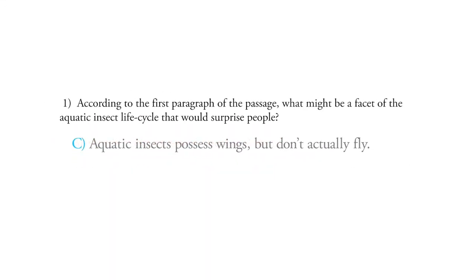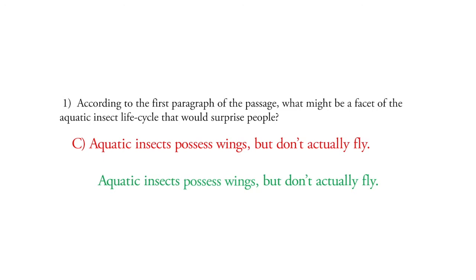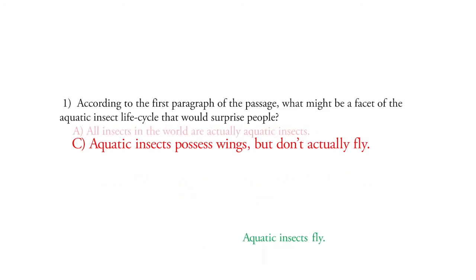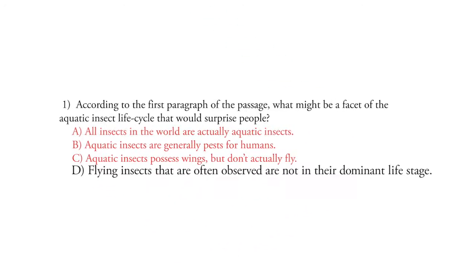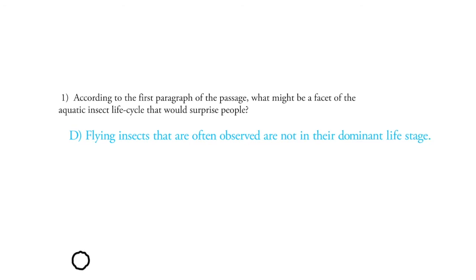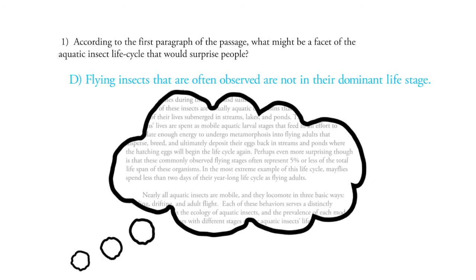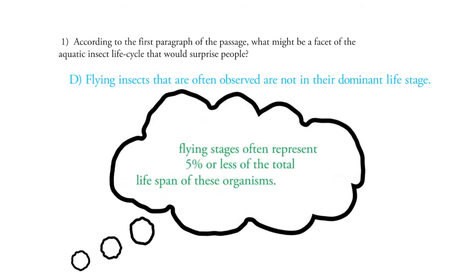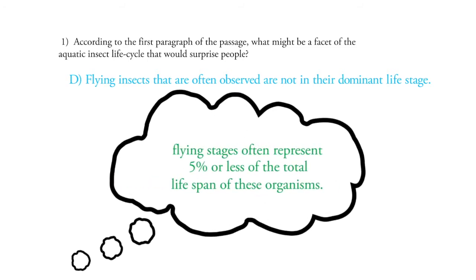Choice C: aquatic insects possess wings but don't actually fly. This is wrong because the passage talks quite a bit about insects flying. So this leaves us with choice D: flying insects that are often observed are not in their dominant life stage. This may trigger a memory from the passage about how flying is the shortest stage of an aquatic insect's life.